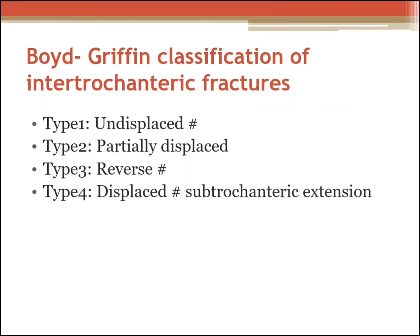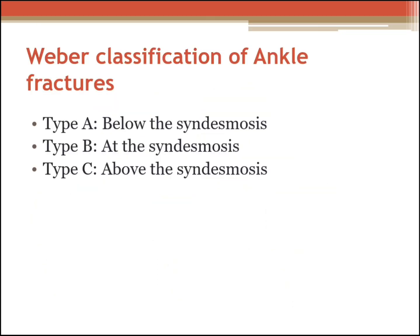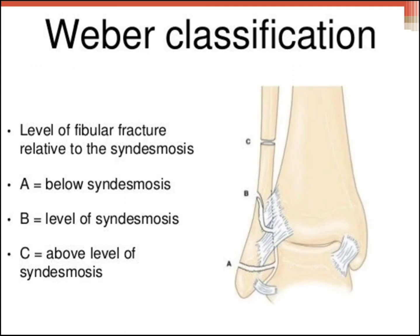The Boyd-Griffin classification of intertrochanteric fractures: Type 1 is an undisplaced fracture, Type 2 is a partially displaced fracture, Type 3 is a reverse fracture, and Type 4 is a displaced fracture with subtrochanteric extension. The Weber classification of ankle fractures: Type A is below the syndesmosis, Type B is at the syndesmosis, and Type C is above the syndesmosis, as shown in the diagram.